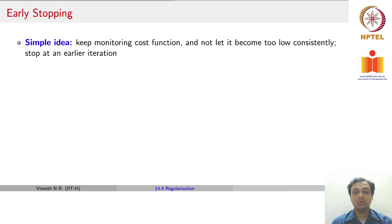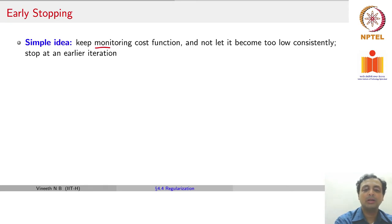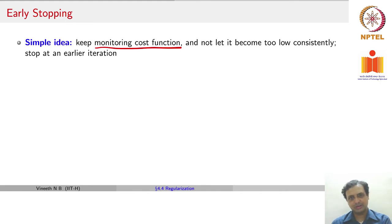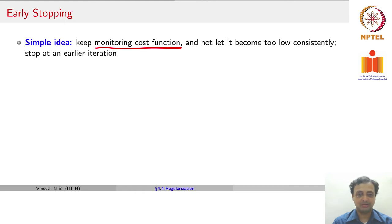Another approach is known as early stopping, which is perhaps the crudest and simplest approach you can use. The simple idea is to keep monitoring the cost function and do not let it become too low consistently — stop at an earlier iteration. Rather, do not let your model overfit your training data. If it goes to zero training error, you are probably overfitting and you do not want that to happen. So you want to stop a little earlier.